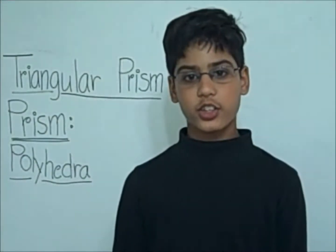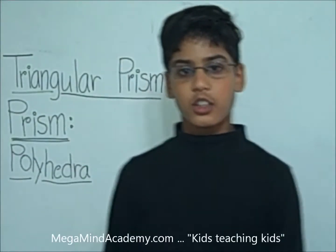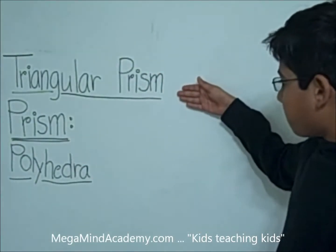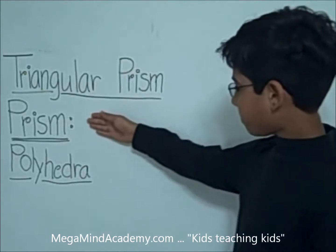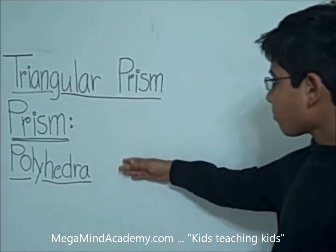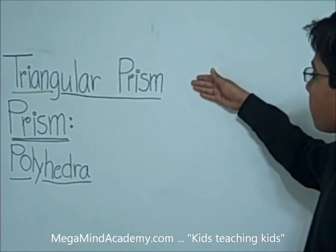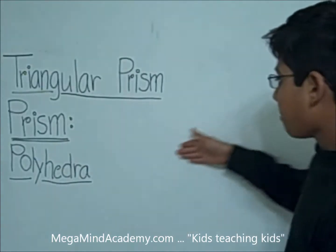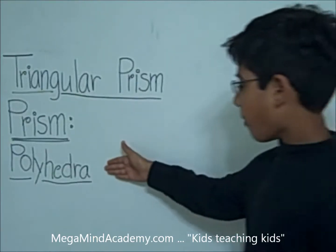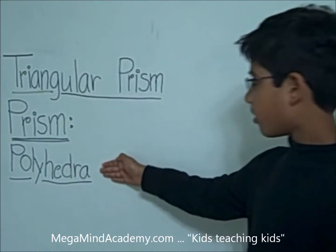Hi, today we're going to learn about triangular prism, prism, and polyhedra. A triangular prism is a type of prism, which is a type of polyhedra.